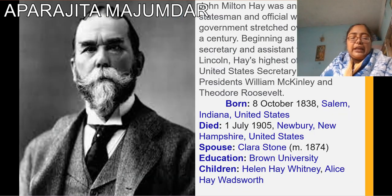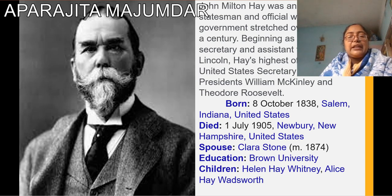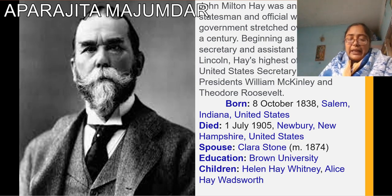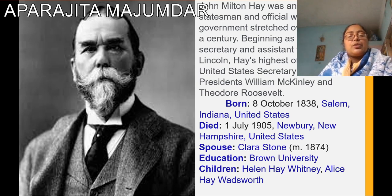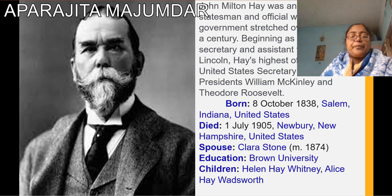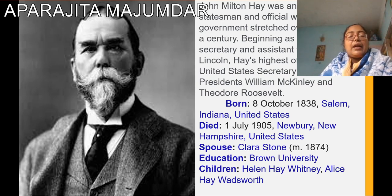Now a little about John Hay, the poet. John Hay was born on the 8th of October 1838 at Salem in the United States. He died on the 1st of July 1905 at New Hampshire, United States. He was married to Clara Stone in the year 1874. He got his education from Brown University and he had two daughters, Helen Hay Whitney and Alice Vassford.